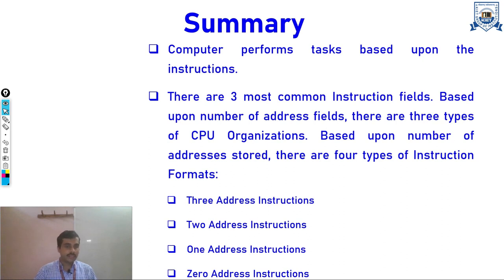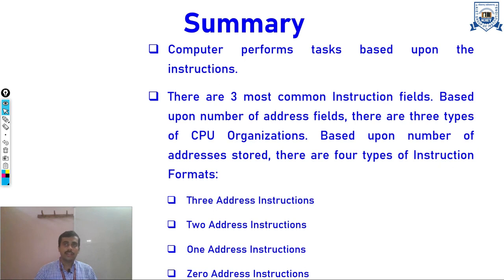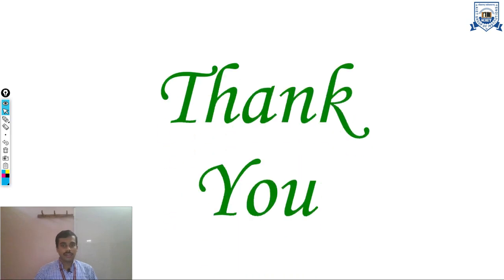In three-address instructions the number of lines in a program is least; in two-address instructions it is greater but the number of bits per instruction decreases; in one-address instructions the bits per instruction decrease further; and in zero-address instructions we use the stack. Thank you.